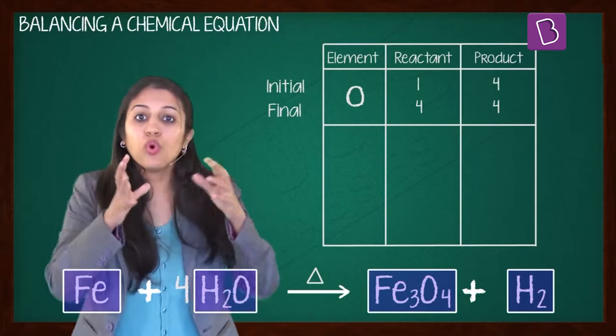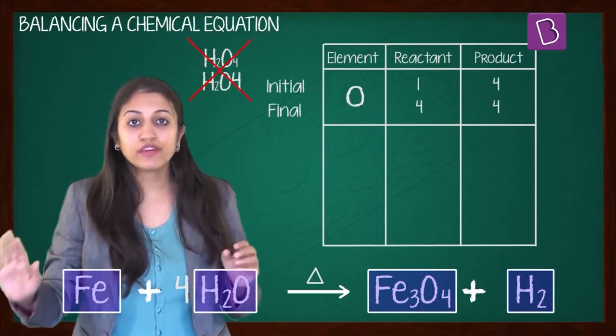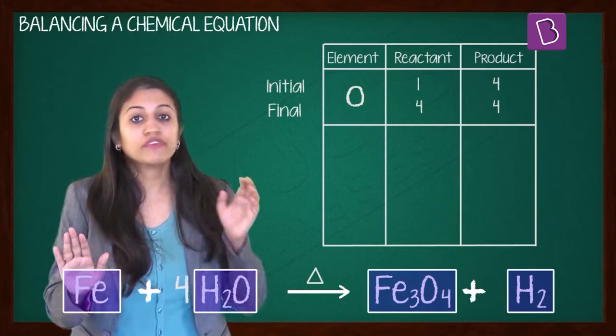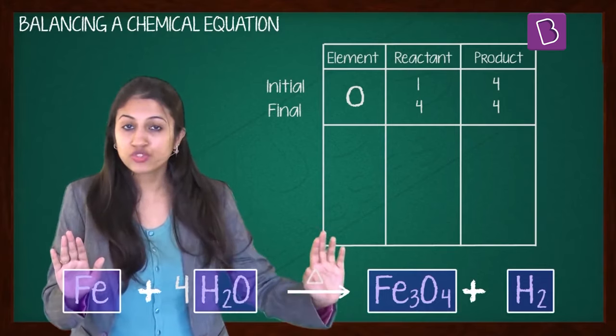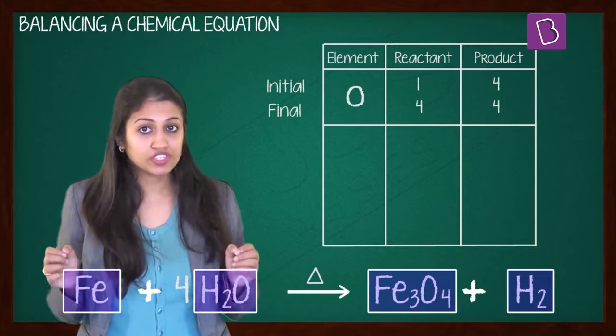Now, the partly balanced equation becomes Fe plus 4H2O giving Fe3O4 plus H2. Now, Fe and H atoms are still not balanced. Pick any of these to proceed.